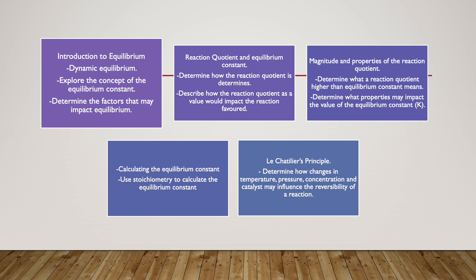On Tuesday we will be going over the magnitude and properties of a reaction quotient. During that lesson we will be able to determine what a reaction quotient is, when is it higher, and how is it related to the equilibrium constant. So if the reaction quotient is higher than the value of K, what would that mean? If the reaction quotient is equal to K, and if the reaction quotient is less than the value of the equilibrium constant K.